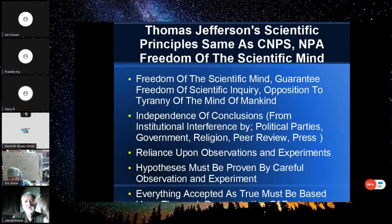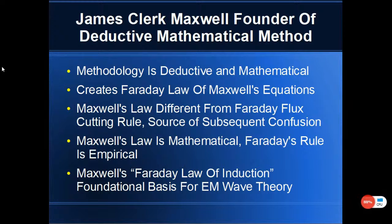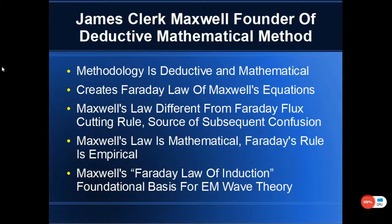There's a book called 'Thomas Jefferson Scientist' by Edward T. Martin, and I've summarized some of Jefferson's principles. He stressed freedom of the scientific mind, guaranteed freedom of scientific inquiry, and opposition to tyranny of the mind. He stressed independence of conclusions — we don't want political parties, government, religion, peer review, or news media telling us what science ought to be. He also stressed the importance of the empirical method: reliance on observations and experiments, and that hypotheses must be proven by careful observation and experiment.